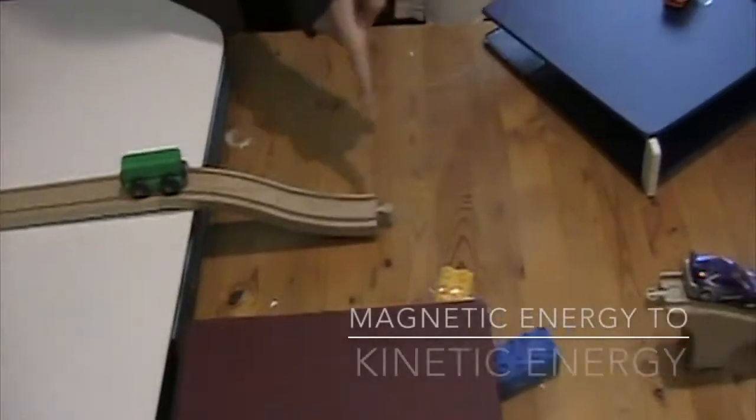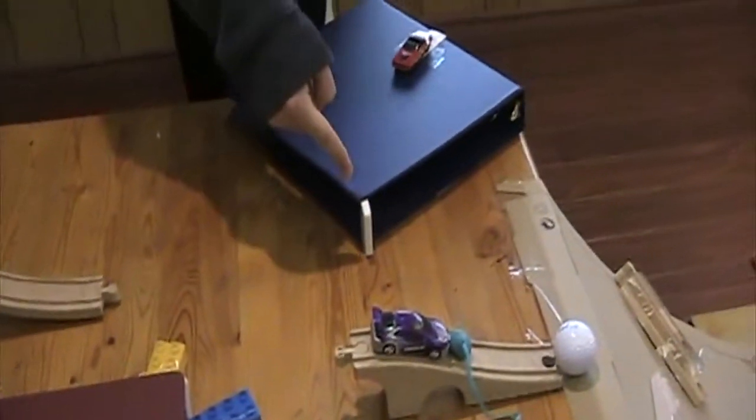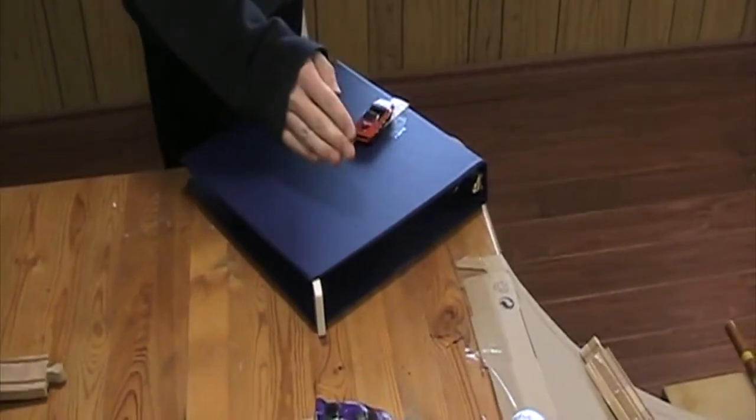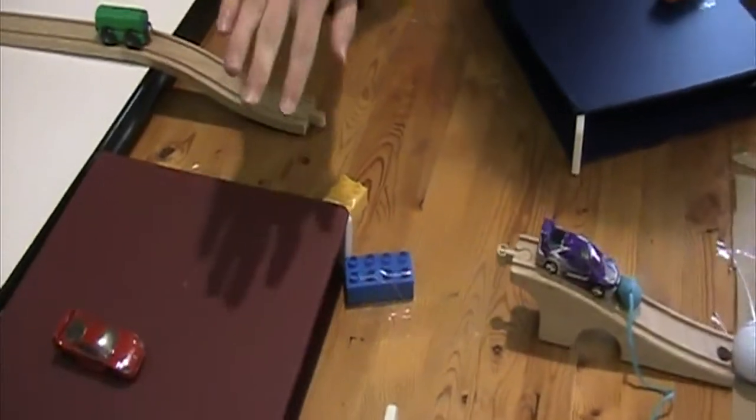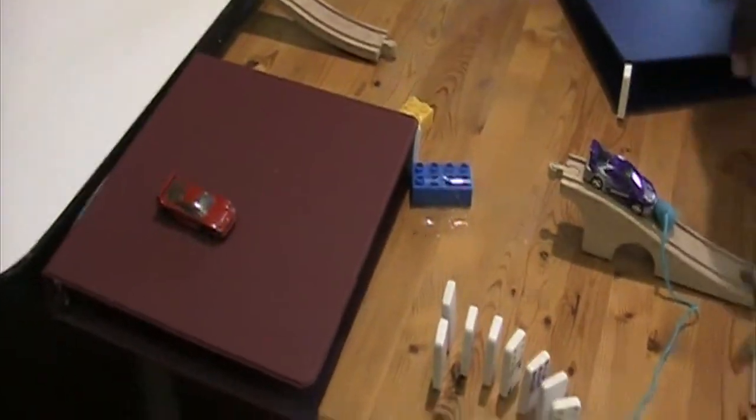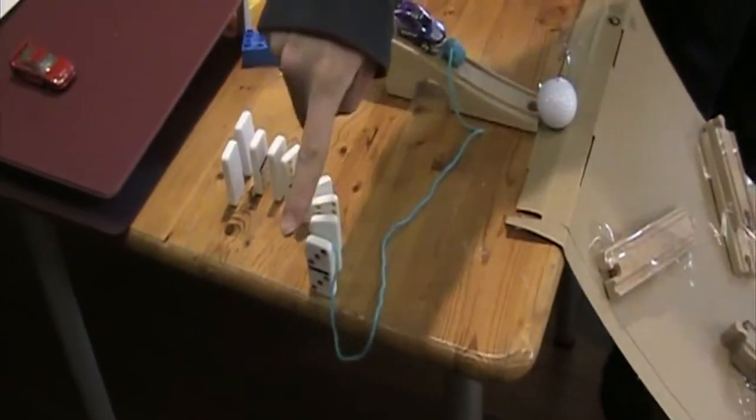The train will be pushed off using magnetic energy into this domino, which will cause the binder to fall down, which will send this car into that domino. The car will hit these dominoes. This domino has a string on it because it's special, and it will fall over.